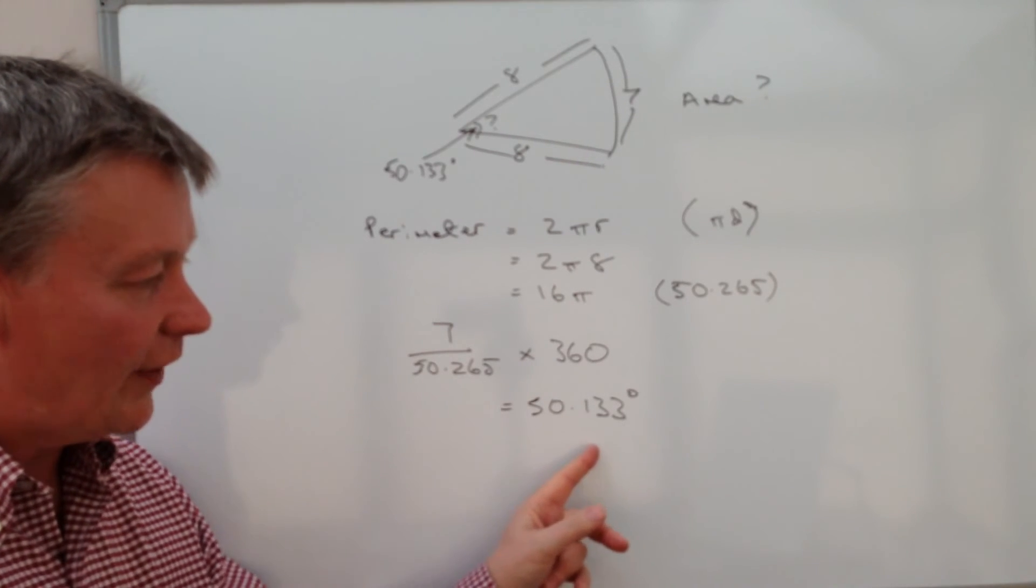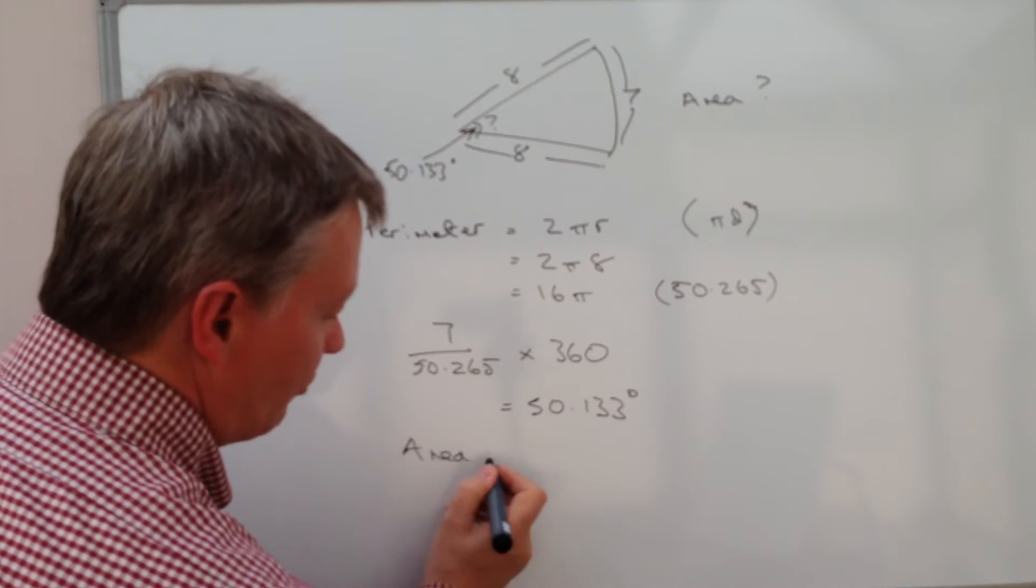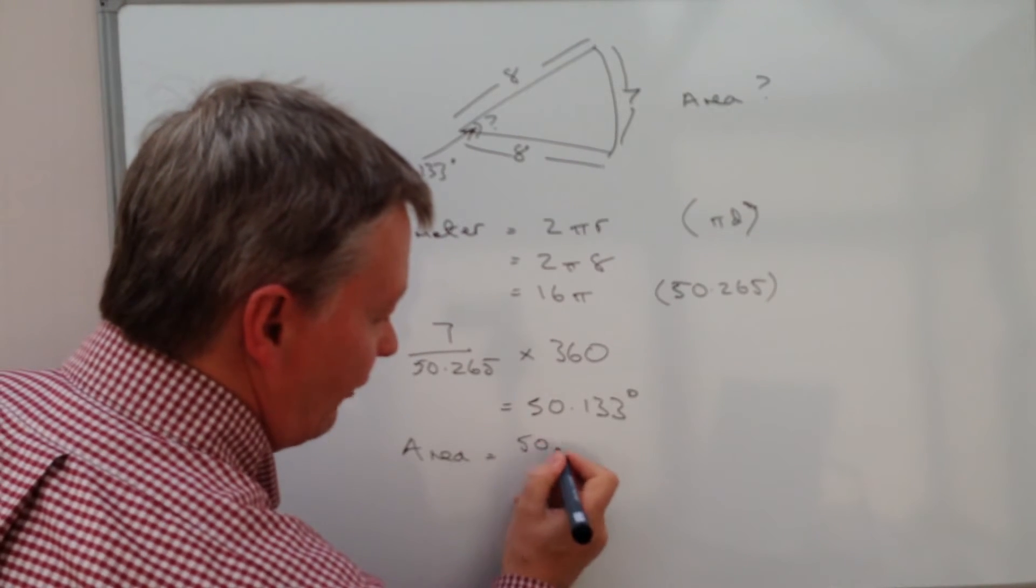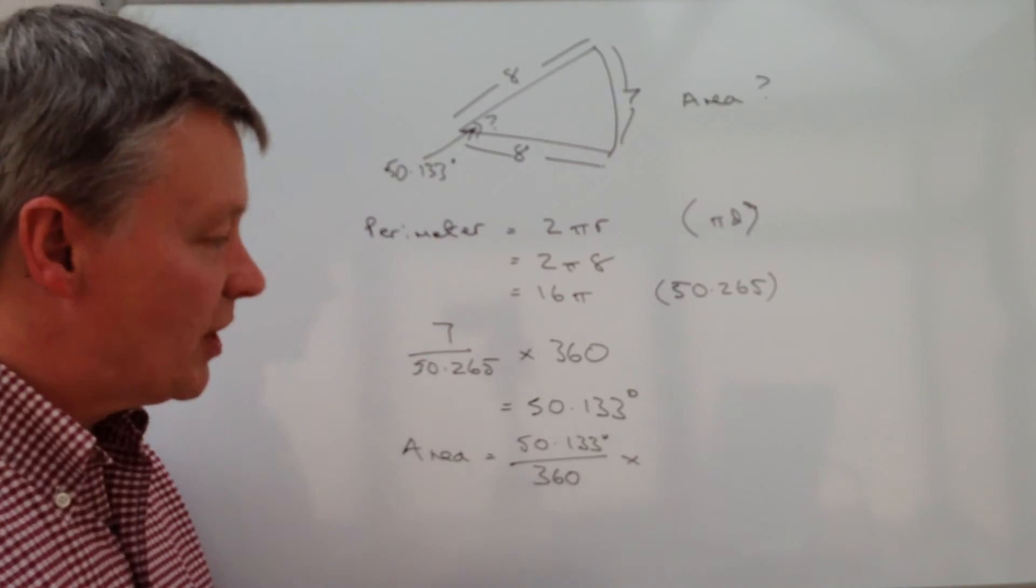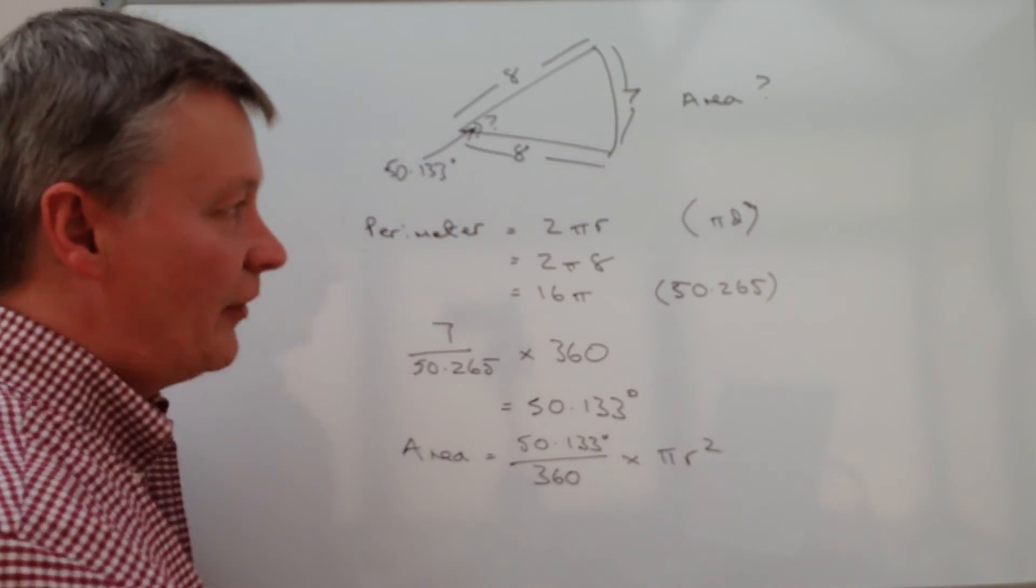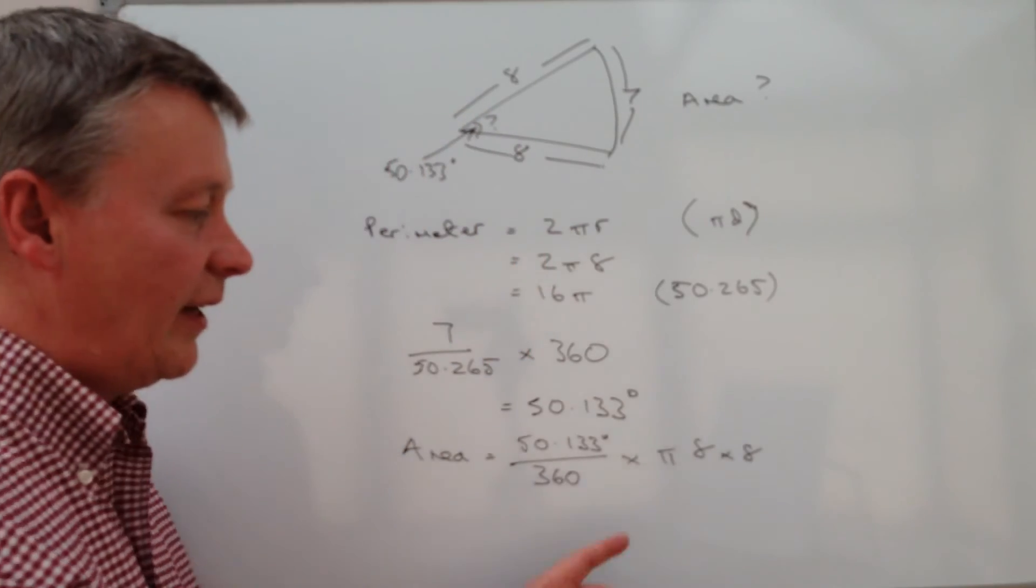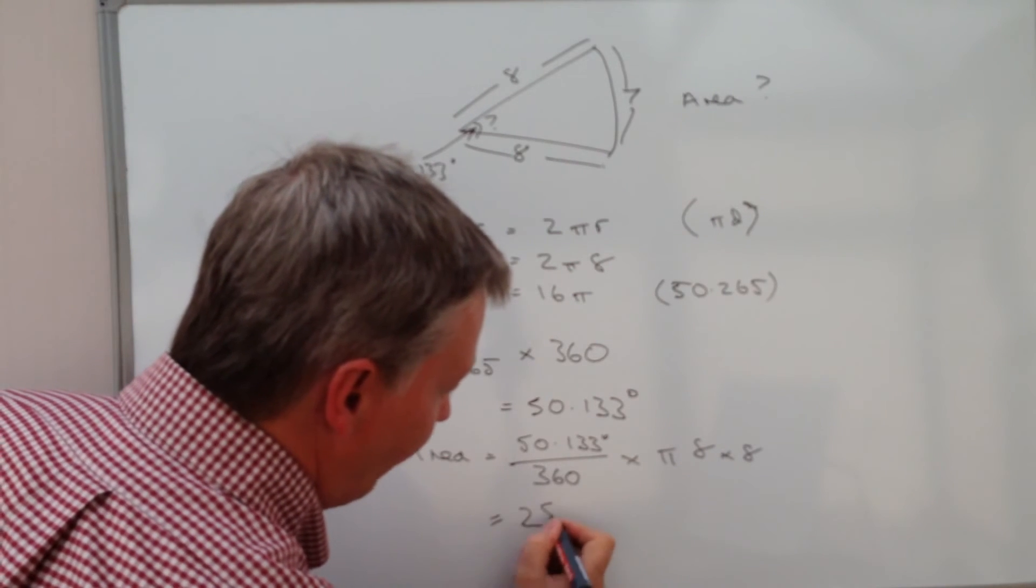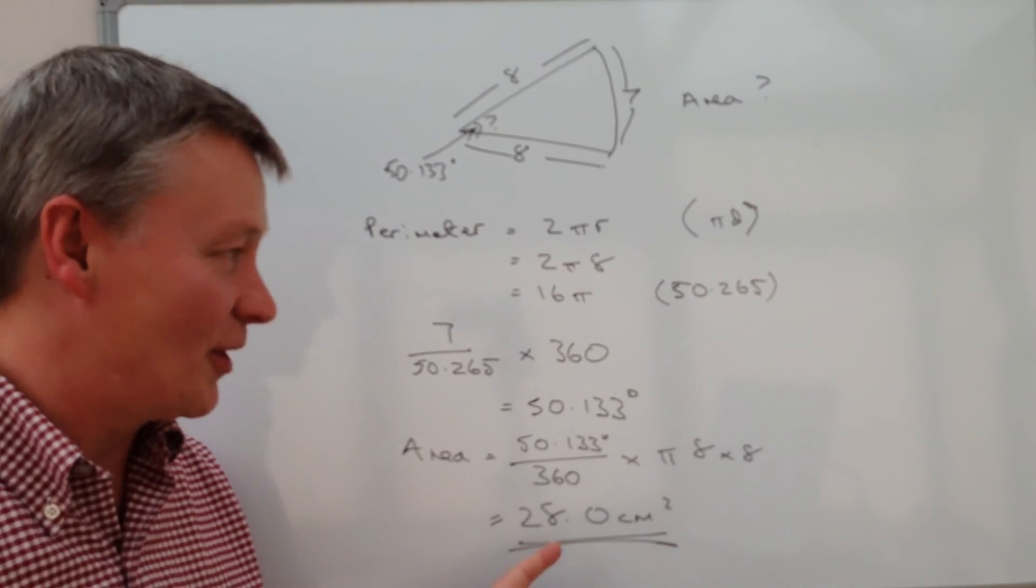Alright, so we've got this value of x is about fifty degrees, so we can use that now to calculate the overall area. And as we've done in the previous videos, we've used this idea of a fraction and we've said well actually the area would be 50.133 degrees out of 360, multiplied by the area calculation for a circle which is πr². Now in this particular case we know r is eight, so it's going to be π times eight times eight, or π eight squared. Plug those numbers into a calculator and you get an overall very neat 28 centimeters squared. And that's actually the answer to this particular question.